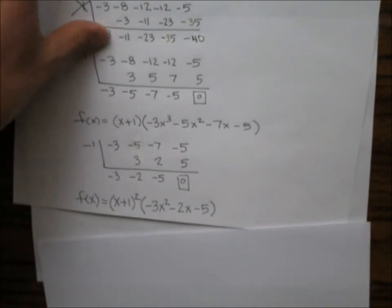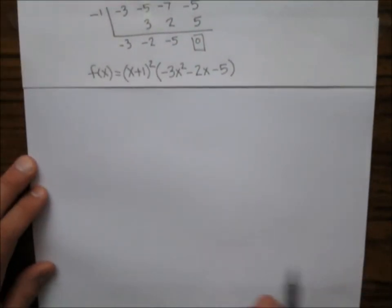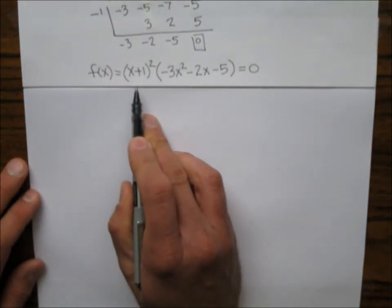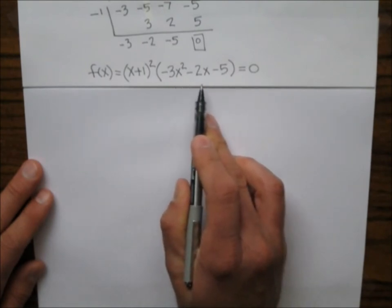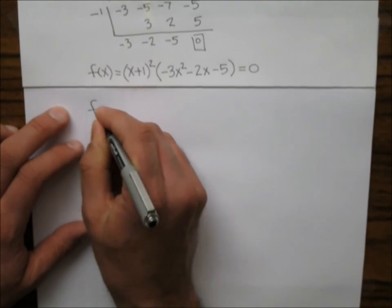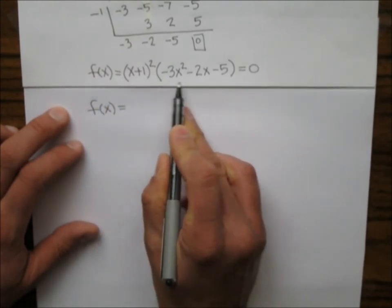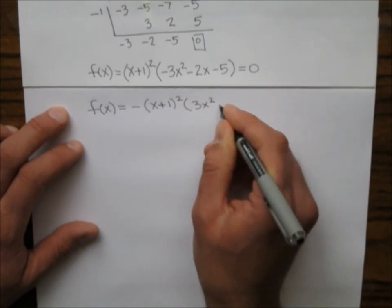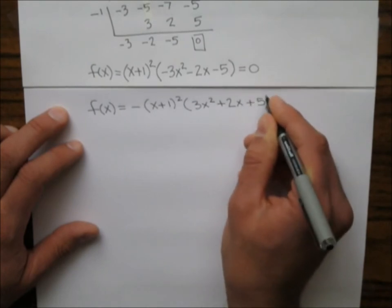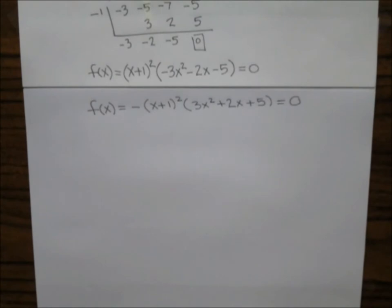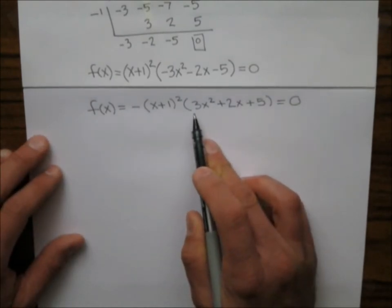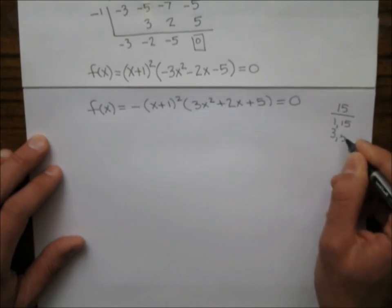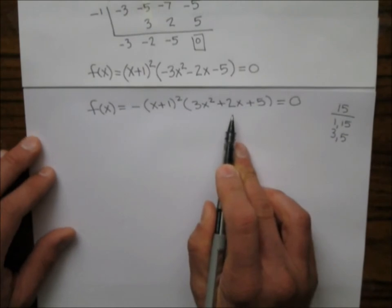We're trying to find the zeros and factor it completely. When I set x plus 1 squared equal to 0, I get x equals negative 1 with multiplicity 2. Now let's see if the quadratic negative 3x squared minus 2x minus 5 can be factored. I'll factor a negative out: so we have negative times 3x squared plus 2x plus 5. Let's check: 3 times 5 is 15. Factors of 15 are 1 and 15, or 3 and 5 — none add up to give 2, so we must use the quadratic formula.